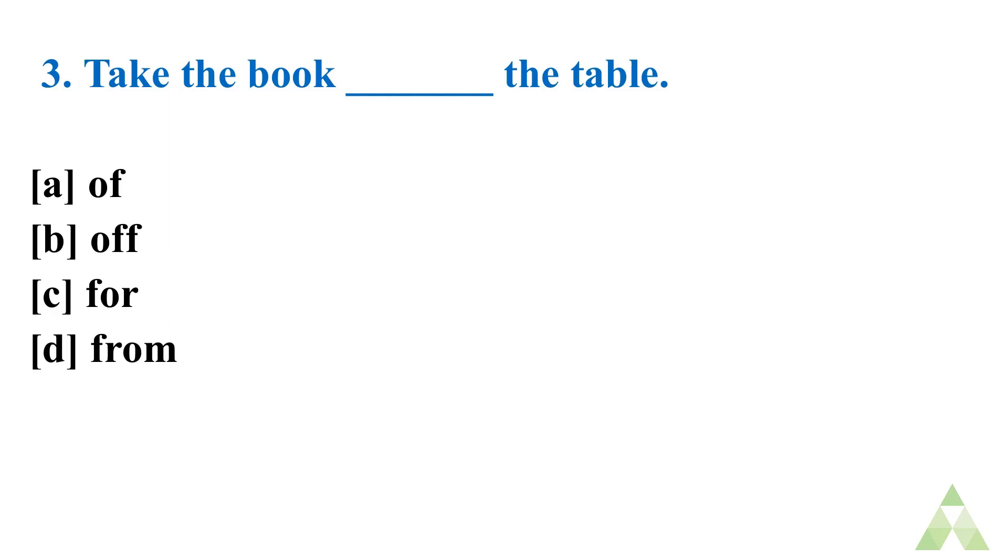Now let's move on to question number 3. Take the book dash the table. Option A. Off. Option B. Off. Option C. For. Option D. From. What is the right answer? Quickly write down. Just you should have to storm your brain. If there will be a little brainstorming then you can write the right answer in the comment box. All of you have written the right answer. But still.